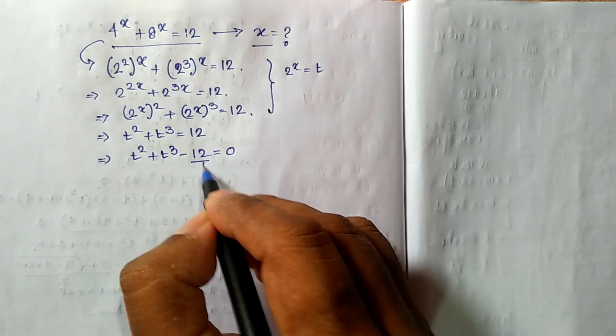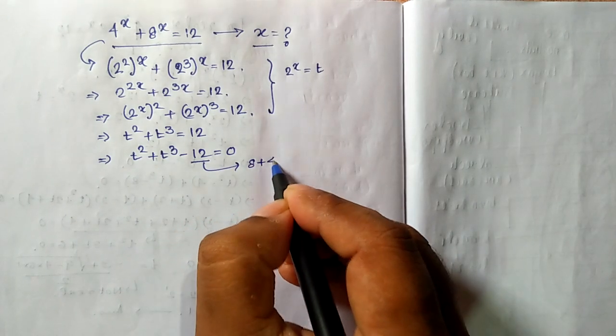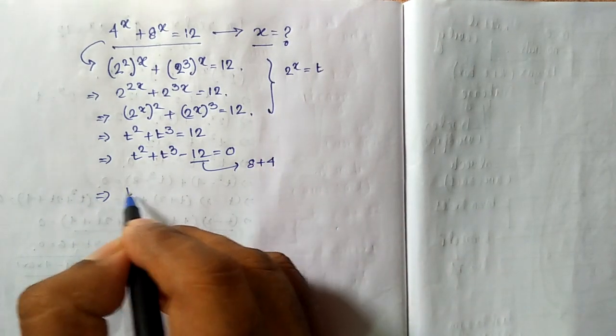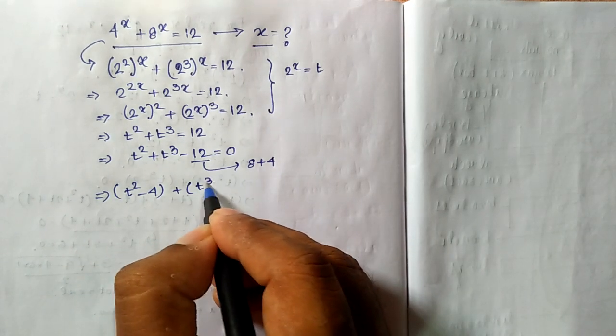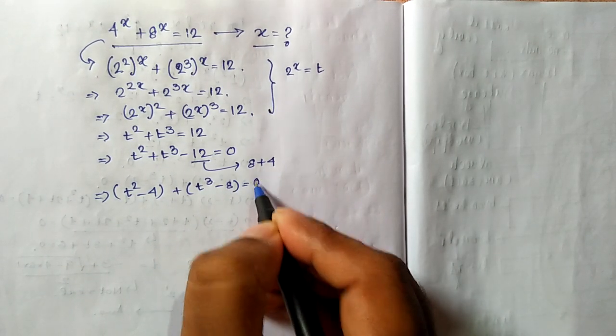Now I am writing 12 as 8 plus 4. That means t squared minus 4 plus t cubed minus 8 equal to 0.